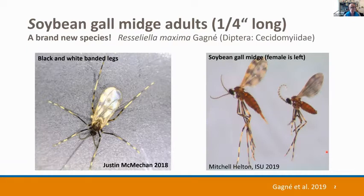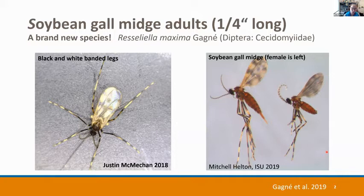This is a brand-new species — a fly in the Midge family, Cecidomyiidae. It got an official species description in 2019 from Raymond Gagnier. You can see two different photos here, a top shot and a side shot. What you take away is they have long white-and-black banded legs, long antennae, mottled wings, and orange bodies. If you look at the right-hand photo, you see the female is a little bit longer, and she has a long ovipositor for laying eggs.